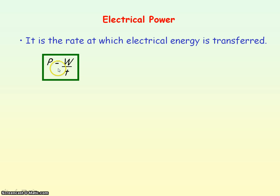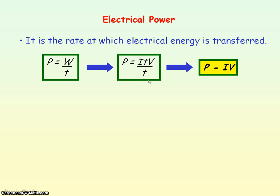Power is given by work done divided by time. The electrical work done or electrical energy transferred is equal to ITV. If we substitute that for W, power equals ITV divided by T. The T's cancel, so electrical power is given by the product of current and voltage.